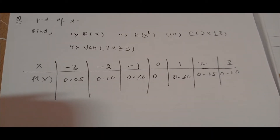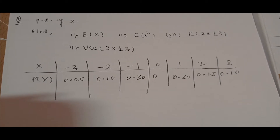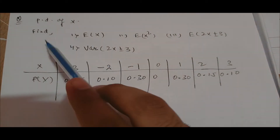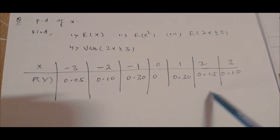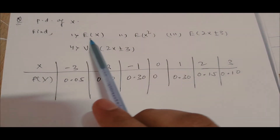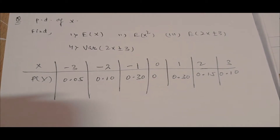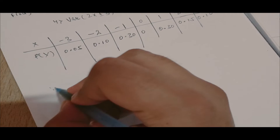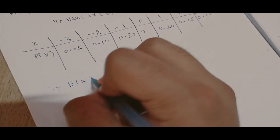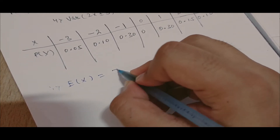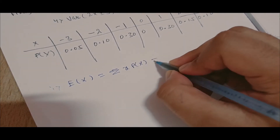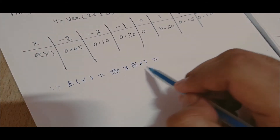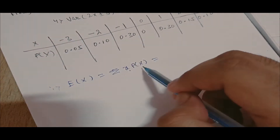Now let us solve some problems on variance and expectation. A probability distribution of X is given. The first question is to find E(X), that is the expectation of X. The formula for E(X) is summation of x·P(x).